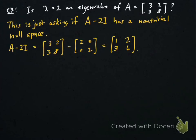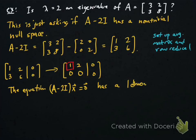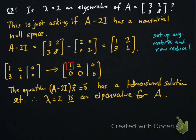Now this is just asking if A minus 2I has a non-trivial null space. So A minus 2I, I can just compute that and I get this [1, 2; 3, 6] matrix. Now we just have to set up the augmented matrix and row reduce to find the null space. There's my pivot, which tells me the equation A minus 2I times X equals 0 has a one-dimensional solution set. So it has a non-trivial null space for that matrix A minus 2I, which tells me that lambda equals 2 is an eigenvalue for A.